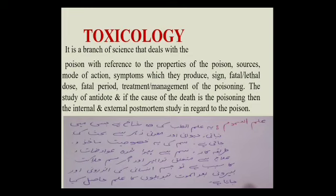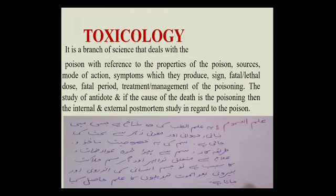In toxicology we study the poison — what is the source of poison, what is the mode of action, what is the fatal or lethal dose, and what is the fatal period. Fatal period is the time period from administration of the poison up to the death of the person. We also study the treatment or management of poison and the study of antidotes. Antidote is the substance which can counter or neutralize the effect of poison, and if the cause of death is poison.